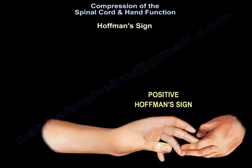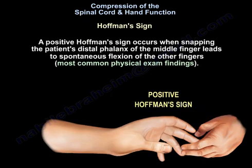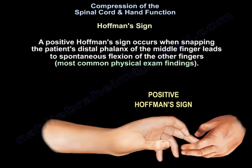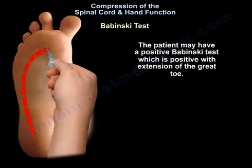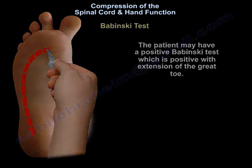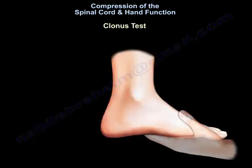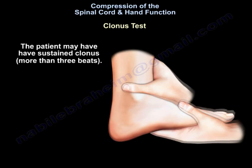Positive Hoffmann sign: snapping the patient's distal phalanx of the middle finger leads to spontaneous flexion of the other fingers — the most common physical exam finding. The patient may have a positive Babinski test, which is positive with extension of the great toe. The patient may also have sustained clonus, more than three beats.